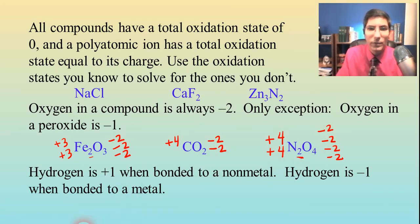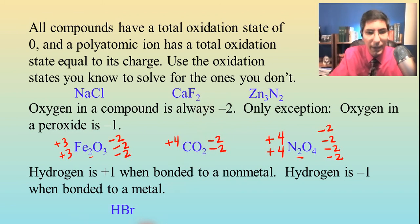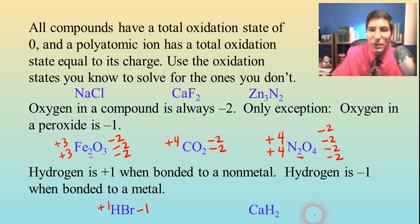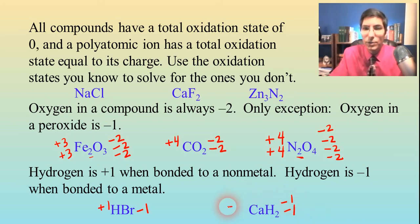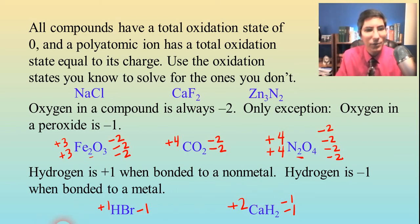Hydrogen is usually a positive one because it's bonded to nonmetals most of the time. Every now and then you'll find a hydride, which is hydrogen bonded to a metal — in that case hydrogen would be negative one. So if we have HBr, hydrogen is positive one, which means the bromide would have to be negative one. Or calcium hydride: calcium is bonded to a metal, so hydrogen is going to be negative one. We've got two of them, so the calcium is going to be positive two to balance that out. Some of these rules link into each other.